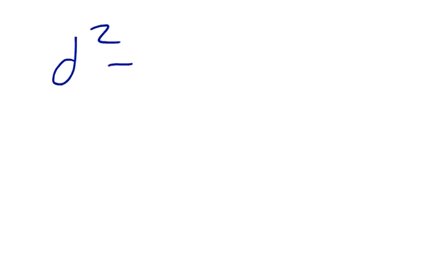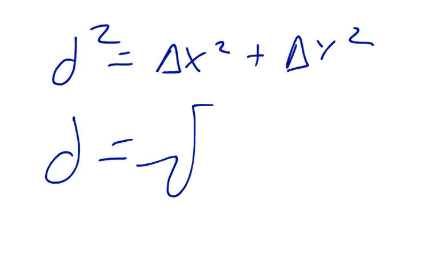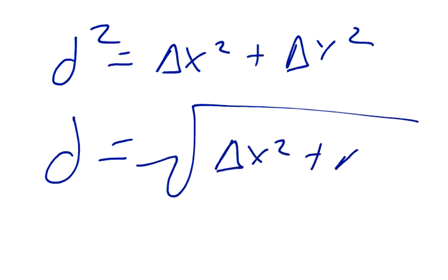The distance squared equals the change in x squared plus the change in y squared. That gives us the distance formula: the square root of the change in x squared plus the change in y squared.